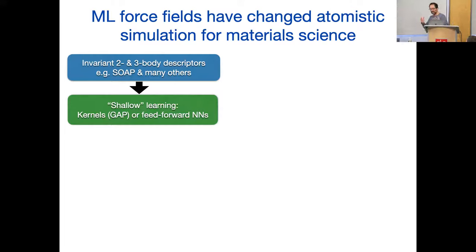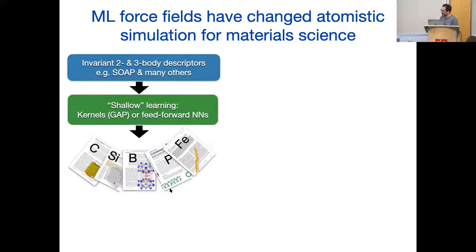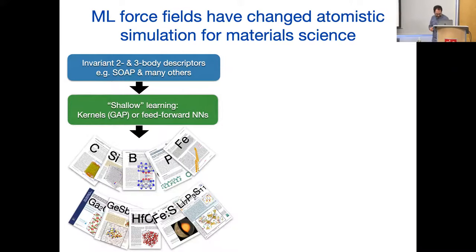We generate potentials for real materials: carbon, silicon, boron, phosphorus, iron. Boron and phosphorus have not had empirical potentials before — they're just too chemically weird. The competition between three and five neighbors for boron is not something you can guess, and phosphorus is even worse. And the moment you put elements together there are materials questions that are unknown: gallium oxide, germanium antimony telluride as a phase change material, hafnium oxide.